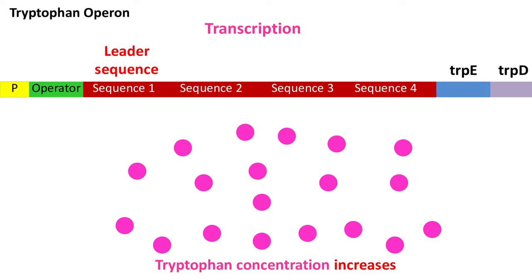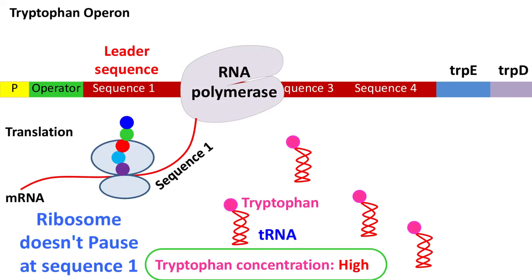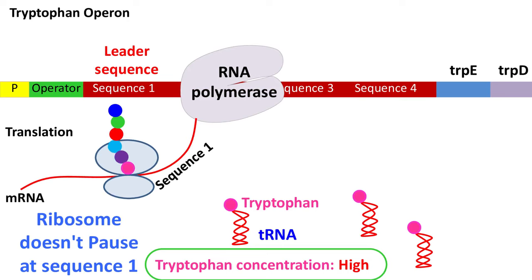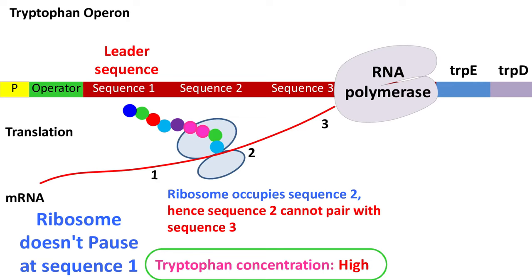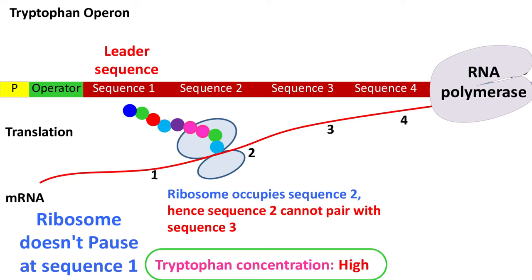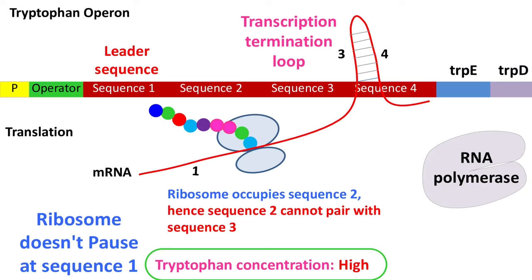When the tryptophan concentration is high, the tRNA charged with tryptophan are easily available. As a result, the ribosome doesn't pause at sequence 1. As the ribosome continues the translation, it reaches sequence 2. And as sequence 2 is occupied, it cannot pair with sequence 3. When the ribosome is busy translating sequence 2, the RNA polymerase transcribes sequence 4. As a result, sequence 3 and 4 form a loop structure — the transcription termination loop. As a result, the RNA and RNA polymerase are detached and the transcription terminates.